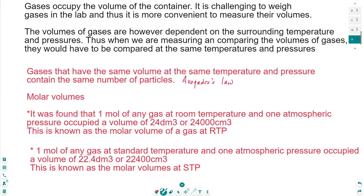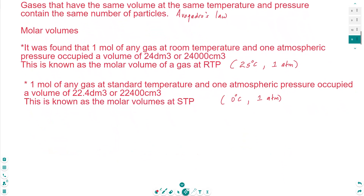As we said about molar volumes, it tells us what one mole of any gas would occupy, and there are two sets of conditions to know. Room temperature and pressure involves a temperature of 25°C and a pressure of one atmosphere. Standard temperature and pressure is where the temperature is 0°C and the pressure is still one atmosphere. The volume is a little bit lower at STP than at RTP because the temperature has been lowered.